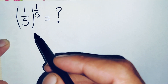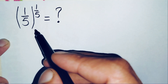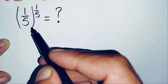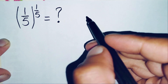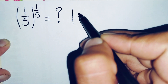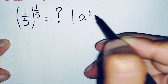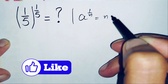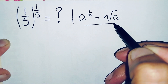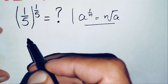Now how can we solve this math problem? First of all we will use an exponential and square root math property. We will change this number to radical form using the property that a raised to power 1 over n can be written as the nth root of the number a.